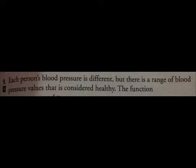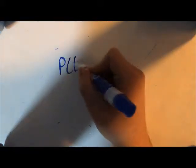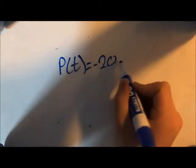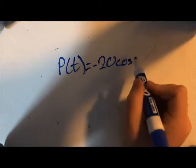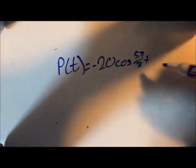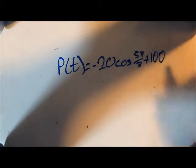The question states: each person's blood pressure is different, but here is a range of blood pressure values that is considered healthy. The function p of t equals negative 20 cos 5 pi over 3x plus 100 models the blood pressure p in millimeters of mercury at time t in seconds of a person at rest.